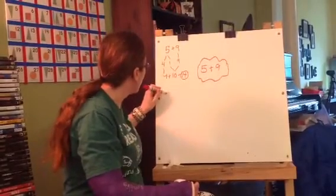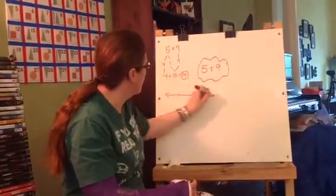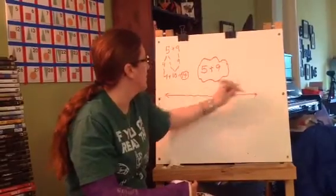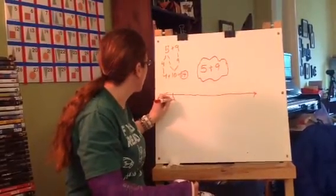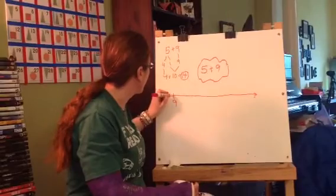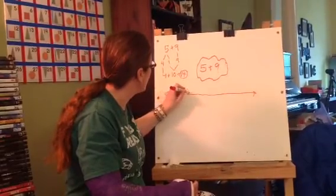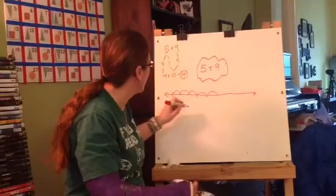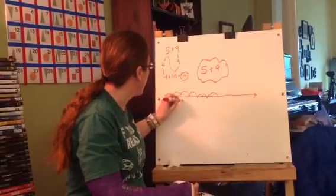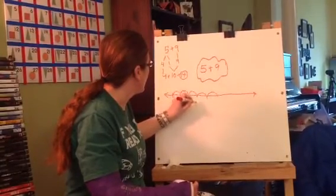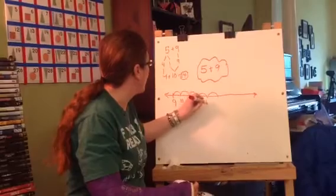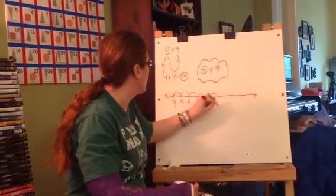Or, I can do a number line. I'm going to start at the 9 because it's the bigger number and I'll only have to go 5 hops. 1, 2, 3, 4, 5. This will be 10, 11, 12, 13, 14.